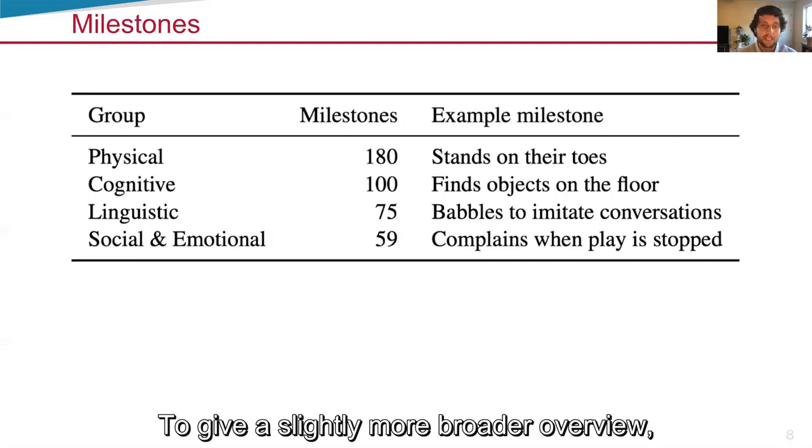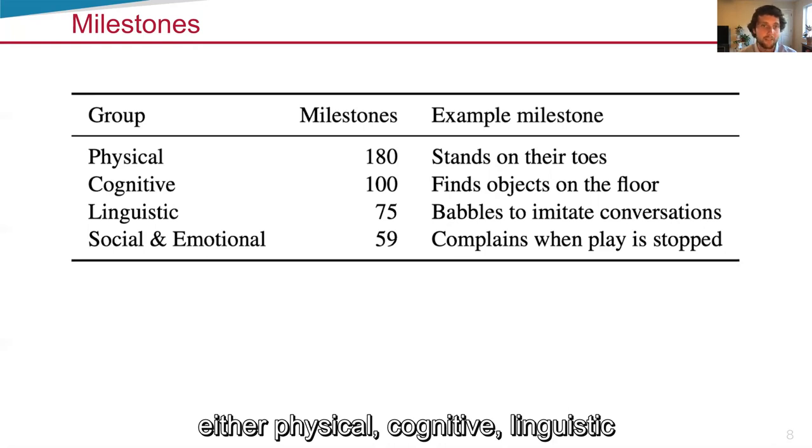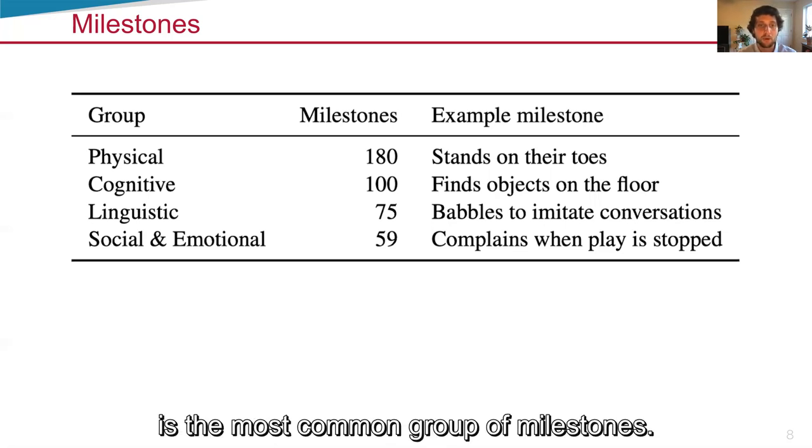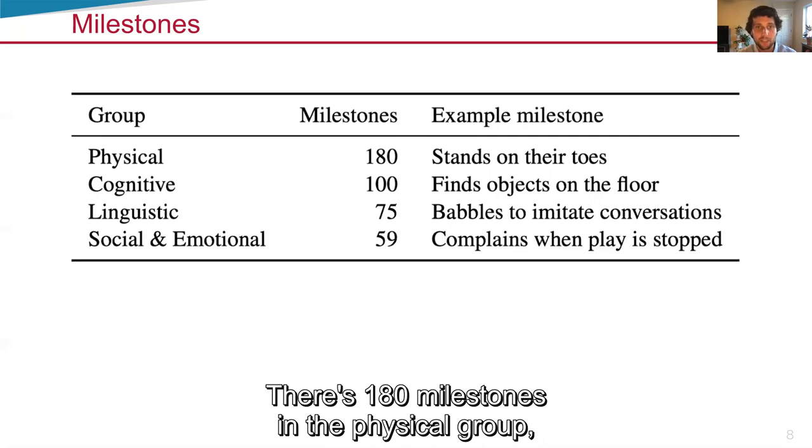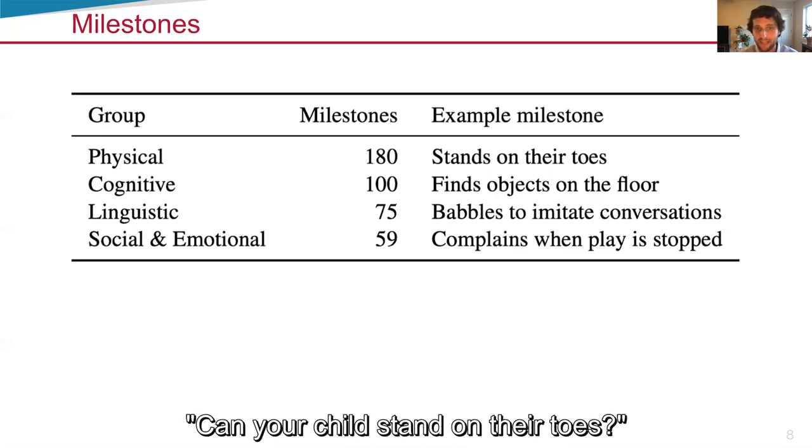To give a slightly more detailed overview, Kinedu thinks about these milestones as living within one of four groups: either physical, cognitive, linguistic, or social and emotional. For example, physical is the most common group of milestones. There's 180 milestones in the physical group. One such example of a milestone is, can your child stand on their toes?